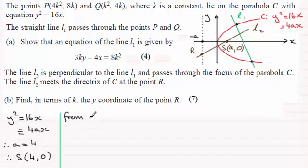So from L1 I should be able to get the gradient and then use the perpendicular gradient rule to get L2. So from L1, I know that if I rearrange this—remember this is the equation for L1—rearrange it to make y the subject, we can see that y would be equal to 4x plus 8k squared, and that is all divided by 3k.